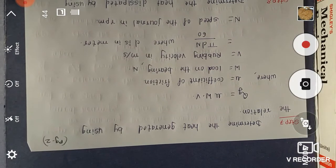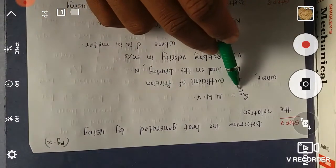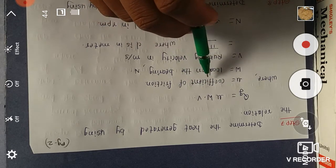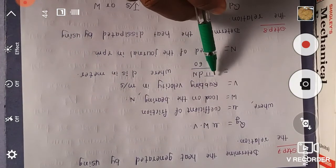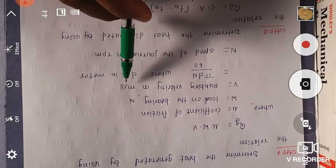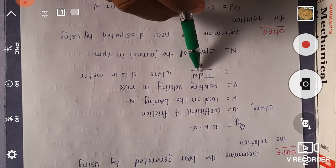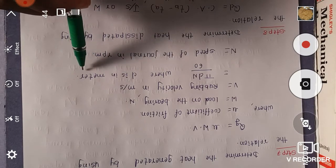Step 7: Determine the heat generated by using the relation QG equals mu into W into V, where mu is the coefficient of friction, W is the load on the bearing in Newton, V is the rubbing velocity in meters per second. If we want to calculate V, then use the relation pi into D into N upon 60, where we substitute D in meters and N is speed of the journal in RPM.